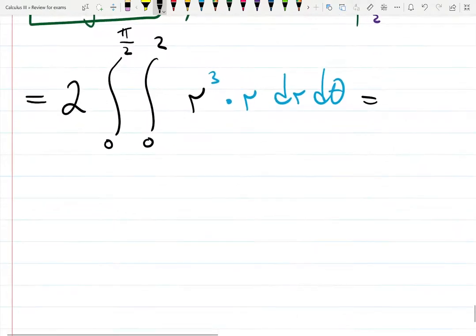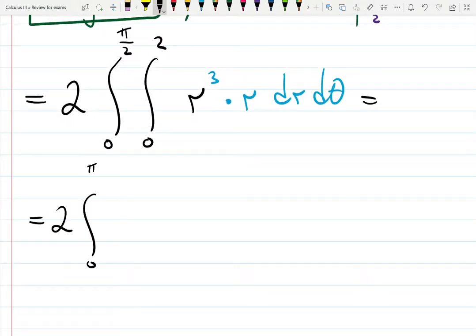Let's see what's going to happen here. 2 from 0 to pi over 2, from 0 to 2. R to the 4 dr d theta.